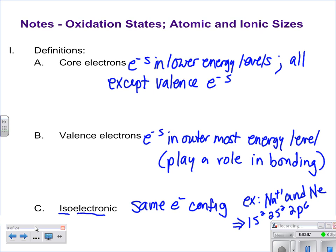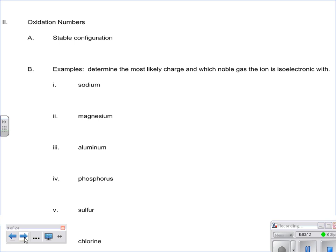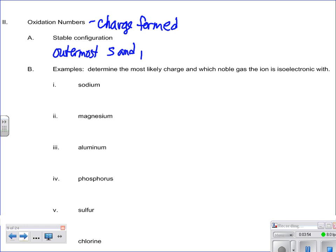Those are some definitions you probably already know. Now we get into oxidation numbers — really what we mean is just the charge that is formed. Whatever that charge is, that's considered the oxidation number. For a stable configuration, remember the octet rule: the S and P sublevels are going to be your valence electrons. For a stable configuration, the outermost S and P sublevels are filled — this is just following the octet rule.